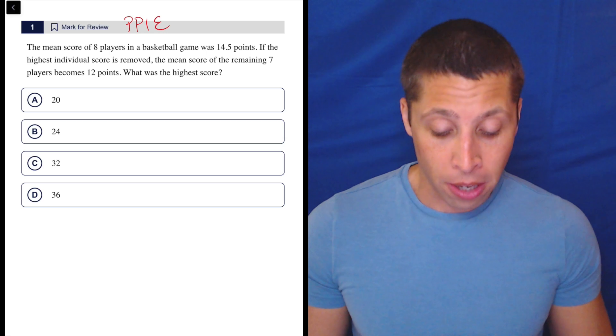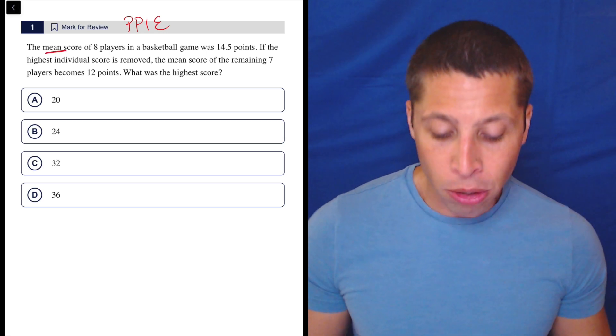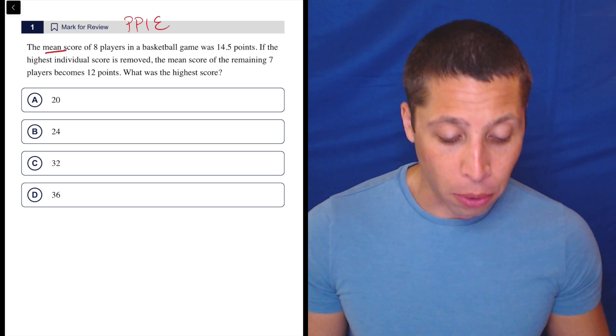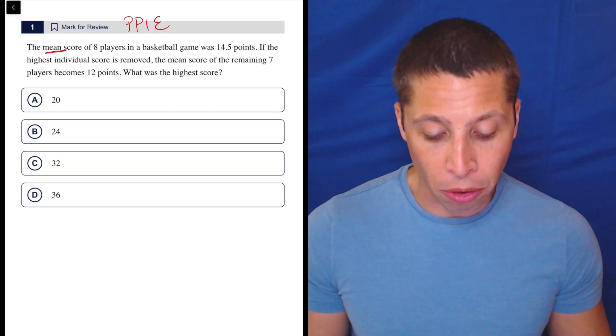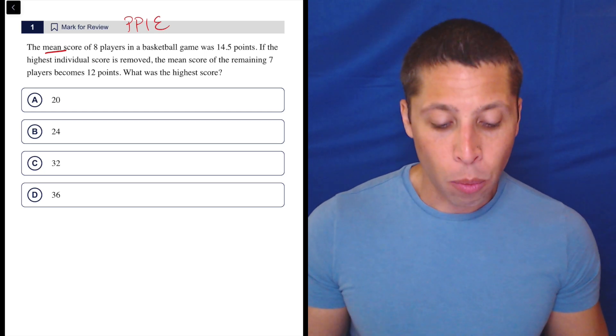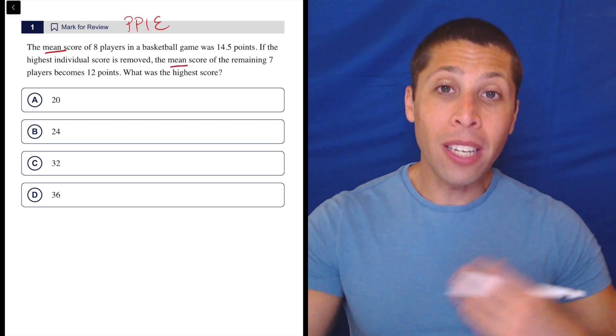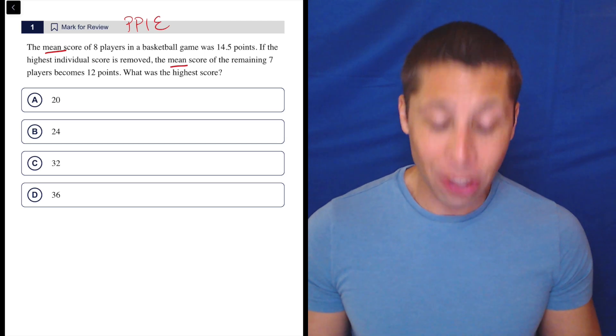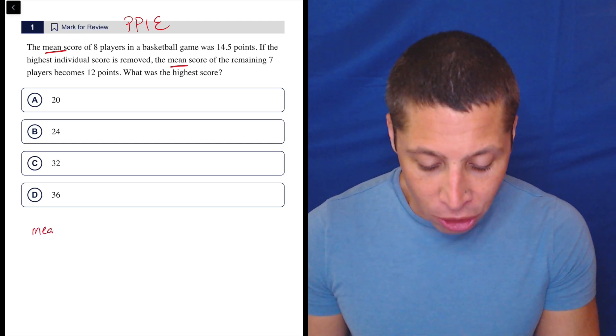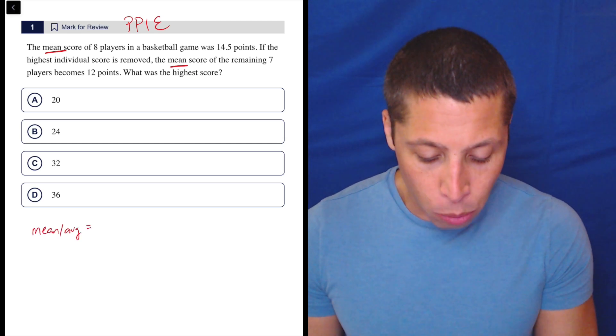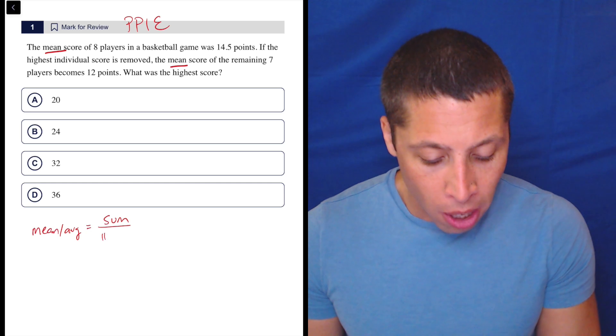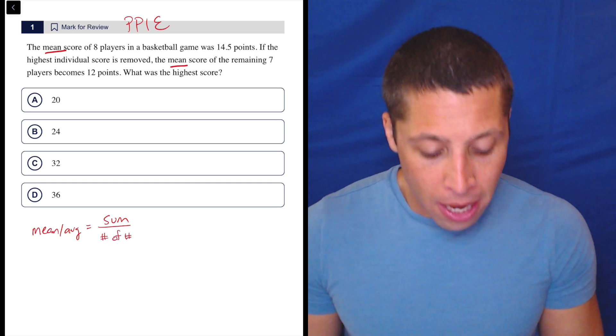Do we have an equation? Well, they're talking about the mean. The mean score of eight players in a basketball game was 14.5 points. If the highest individual score is removed, the mean score of the remaining seven players becomes 12 points. What is the highest score? We're talking about mean, we need to instantly know that we have an equation for mean. The mean, which is the average, is equal to the sum of the numbers over the number of numbers in a particular set.